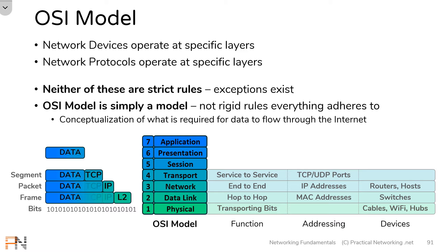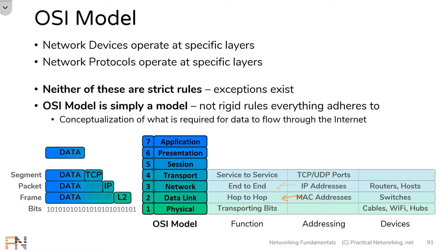That wraps up our lesson on the OSI model. The main takeaway is that each layer has a specific function that contributes to the overall goal of allowing two hosts to share data with one another. Each layer uses its own addressing scheme to accomplish its goals. And there are various devices and protocols which operate at specific layers of the OSI model — but do keep in mind, exceptions do exist. In the next lesson, we'll be looking at everything a host does to put data on the wire. I hope you enjoyed this video, and we'll see you in the next lesson when we discuss everything a host does when communicating on the internet.